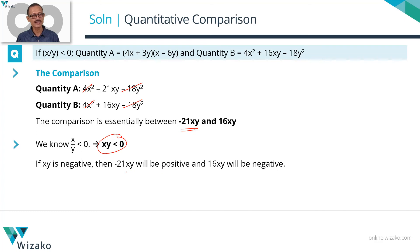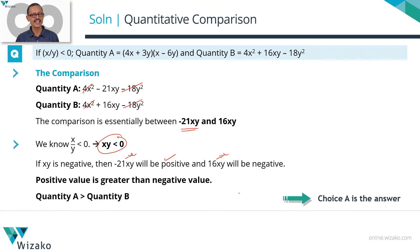So -21 times xy is -21 into a negative number which is going to be positive. 16 times xy is 16 times a negative number that's going to be negative. Positive numbers are greater than negative numbers which means quantity A is greater than quantity B. Choice A is the answer.